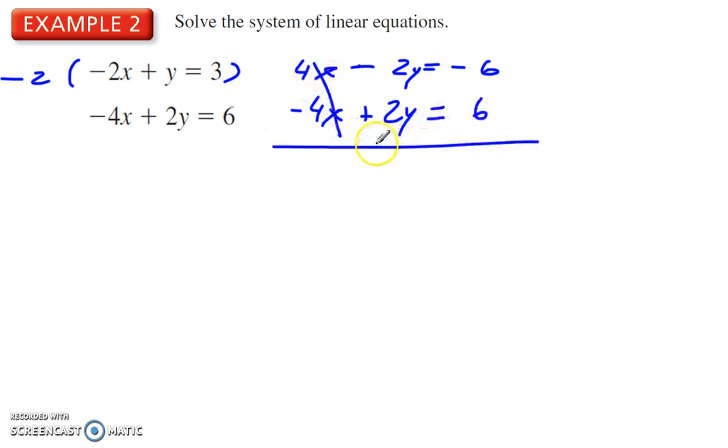This cancels out, and this cancels out, leaving me with 0, and -6 + 6 is 0. So 0 = 0, that's true, but I still don't know what x and y are.